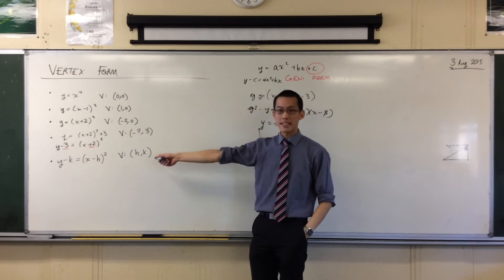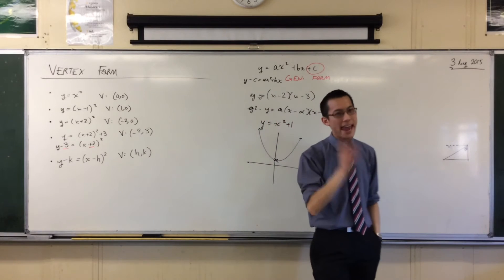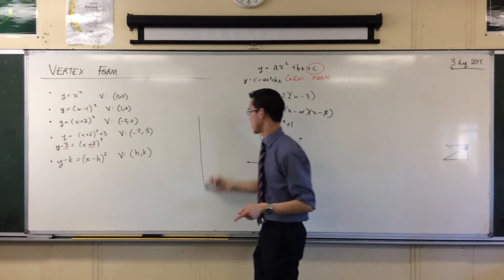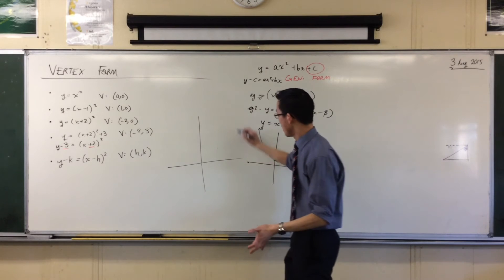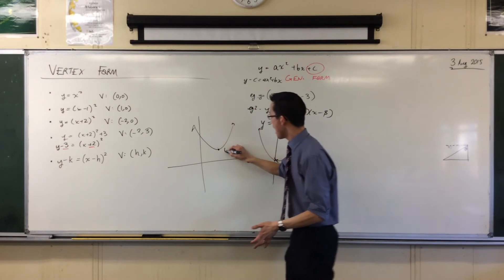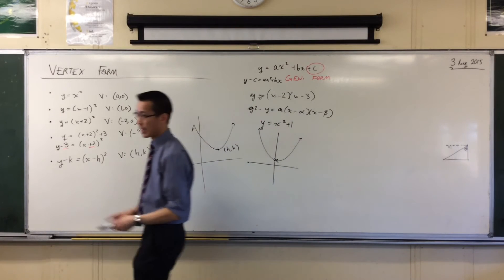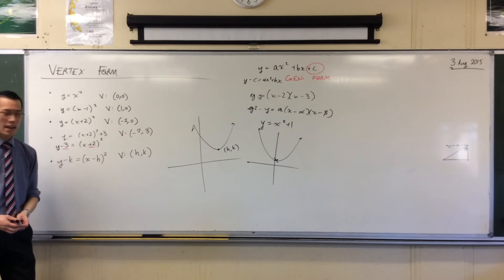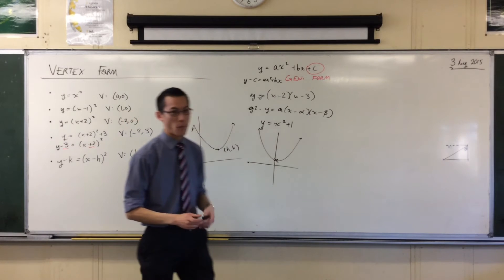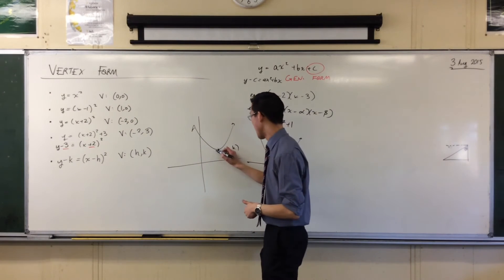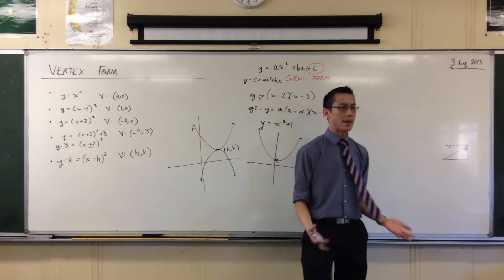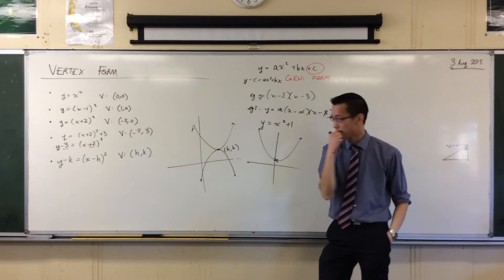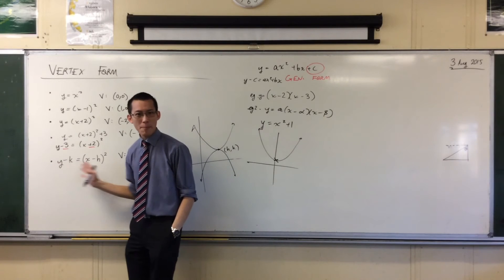There's my vertex at h,k. If I wanted any parabola that had that vertex, because there's a whole bunch, right? For example, if you have a parabola, and its vertex is h,k right there, there's an infinite number of parabolas that all share that vertex, right? For example, if you went upside down, if you flipped upside down. What would I do to that, by the way? How would I flip that upside down?